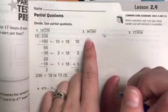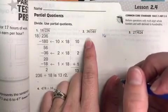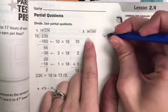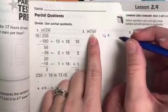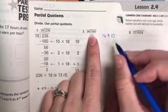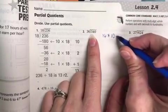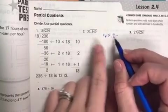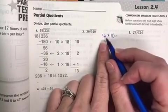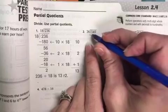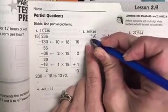36 times 10 would give me 360, and since I have 540, I know that it can in fact go in at least 10 times. So that will be my first partial quotient, and I'm going to subtract that. 10 times 36, I'm going to subtract 360.